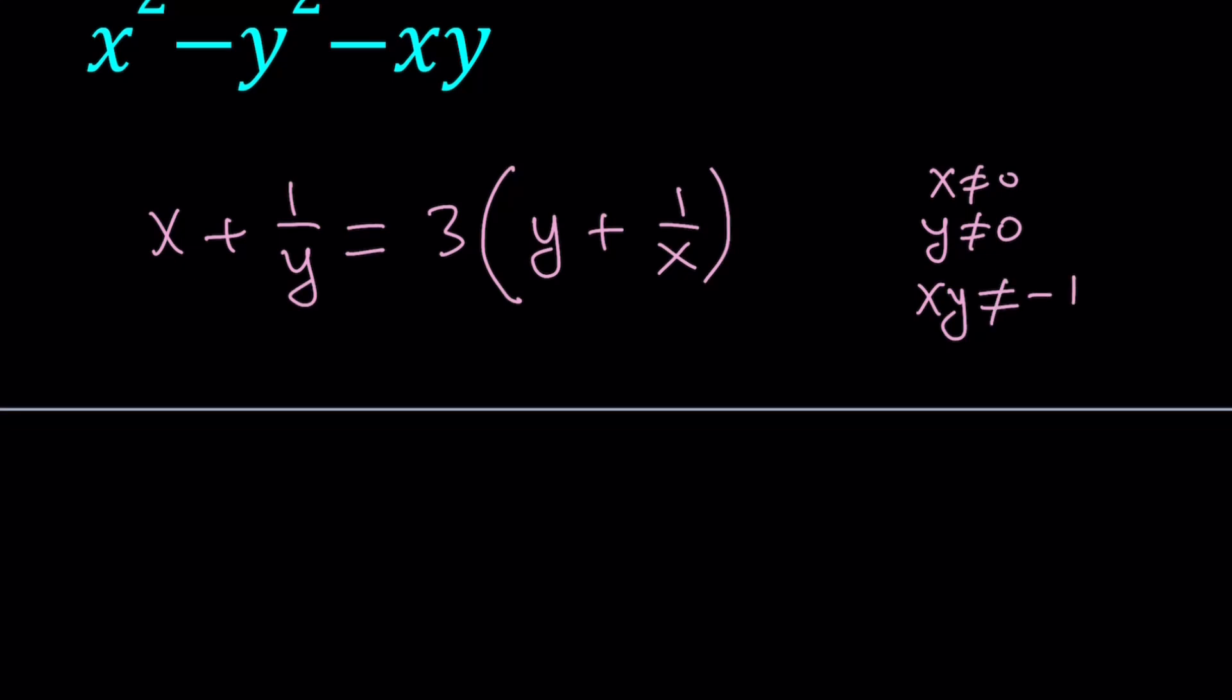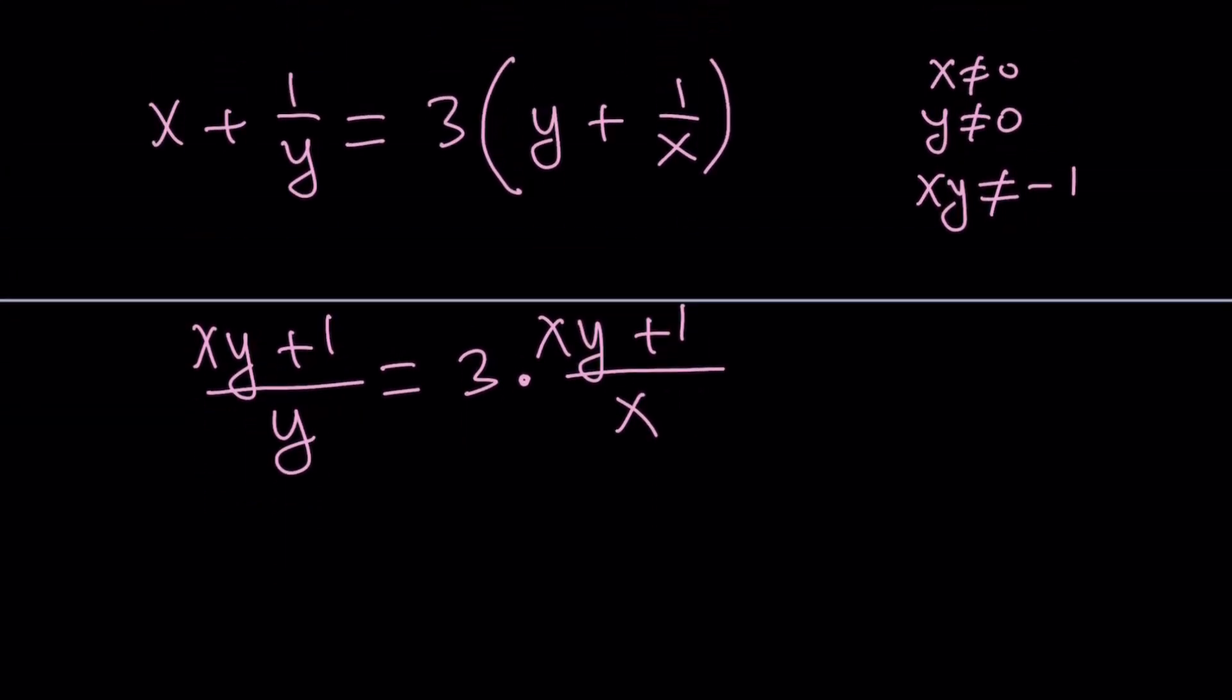And what is that supposed to mean? It means the product is not equal to negative 1. What happens if xy is equal to negative 1? We'll explore that later. Anyways, let's make a common denominator. xy plus 1 over y equals... Maybe that is possible. I'm thinking about it right now. So obviously xy plus 1 equals 0 is a possible solution. So I guess we shouldn't disregard that.